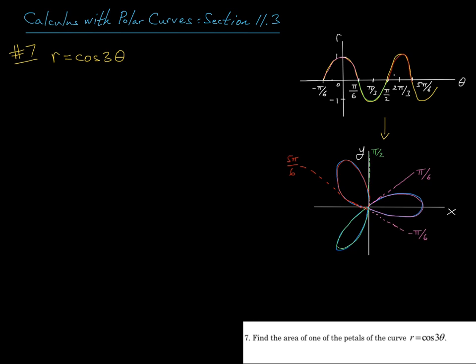And then from pi over 2 to 5 pi over 6, r is positive, so we're going to be in quadrant 2, and we'll trace out this petal here.